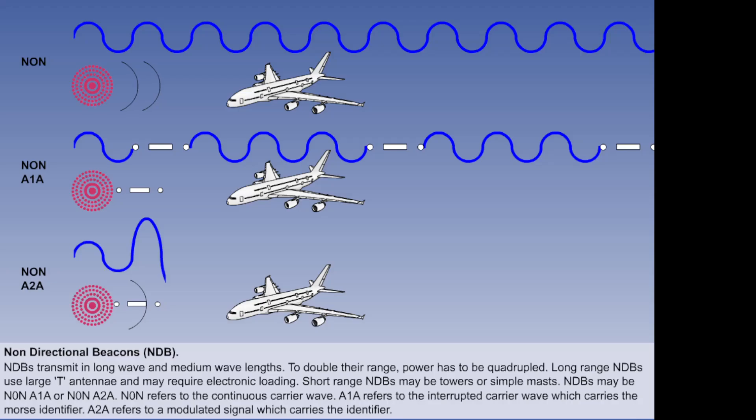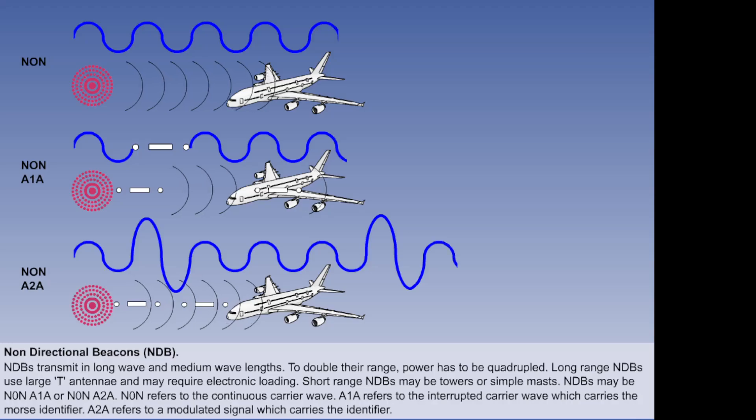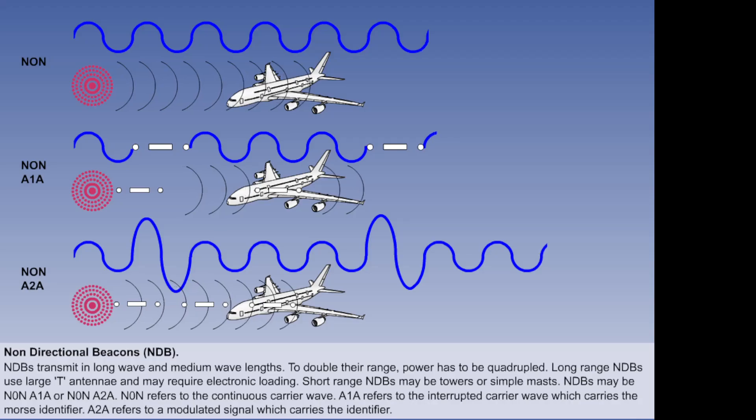The A2A designator is given to those stations that carry the NDB identifier by an A2A signal, which is a keyed, single tone amplitude modulation. N0N A2A beacons are normally used for short and medium range beacons.